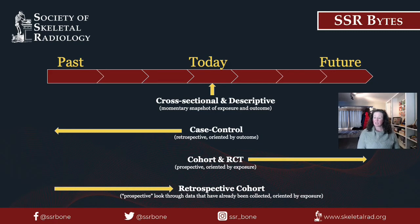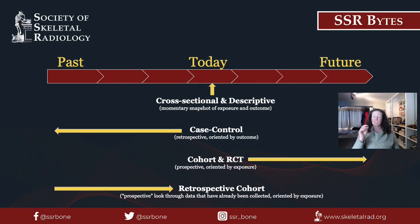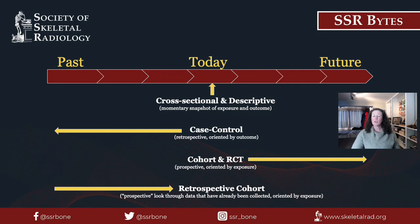A case control study starts with the point of view of the patient today. You know the outcome and whether or not the population or patient has it, then you look back to see if they experienced your exposure of interest. Next are the cohort studies and randomized controlled trials. As of today, you know the exposure — or in the case of an RCT, you assigned the exposure — and then you follow the patients forward to see if your outcome of interest occurs.